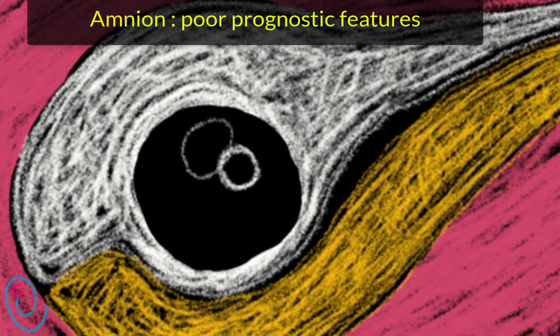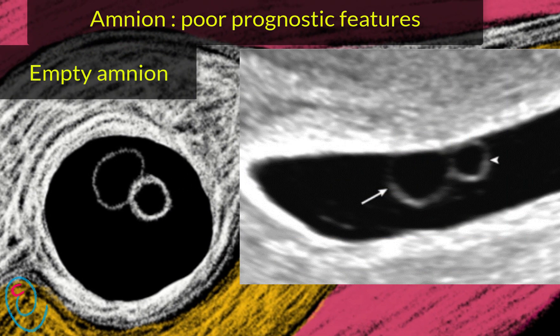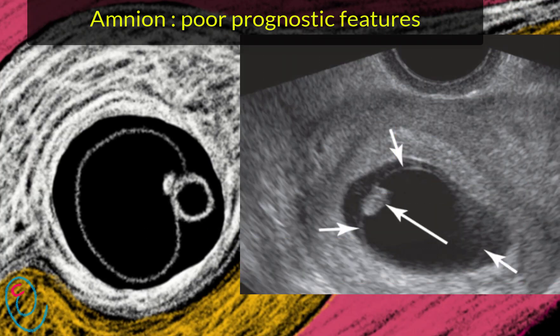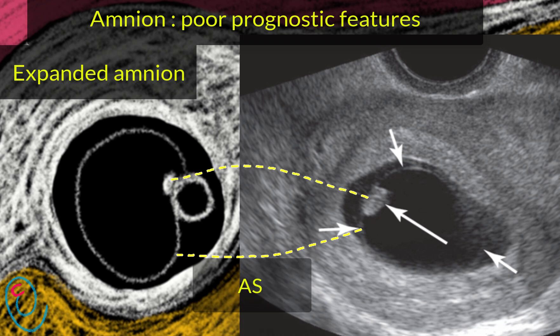Empty amniotic cavity without an embryo is a feature of concern. Sometimes it may be difficult to differentiate between a large yolk sac and an empty amniotic cavity, but this does not make a difference because both features are poor prognostic features and require more frequent follow-up. Regarding expanded amniotic cavity, the amniotic sac diameter and the crown-rump length are usually within 1–2 mm of each other, and a larger amniotic cavity compared to the crown-rump length is also a feature of concern.